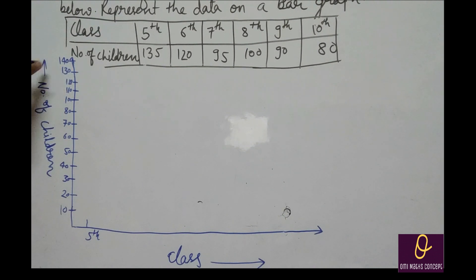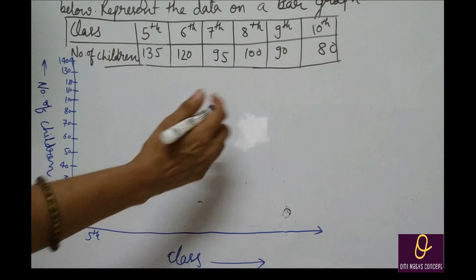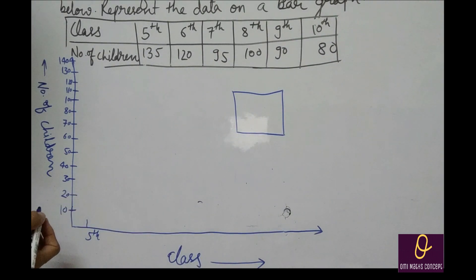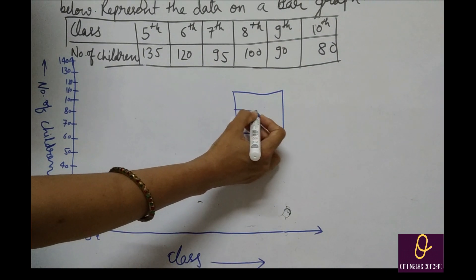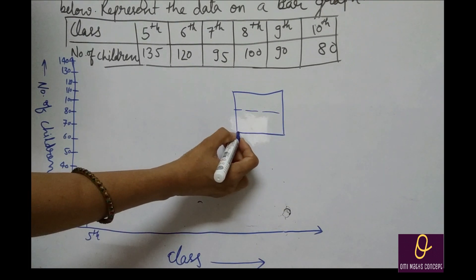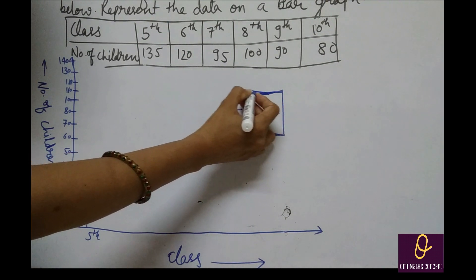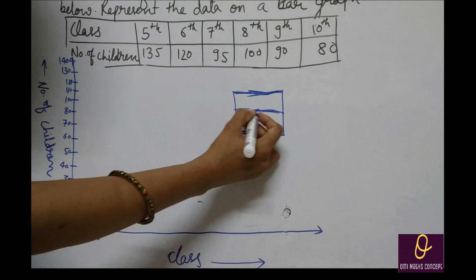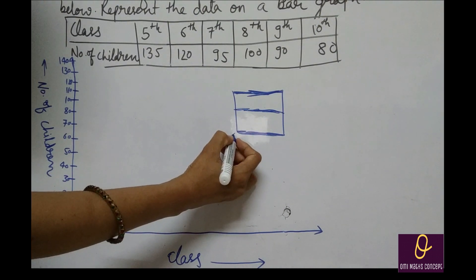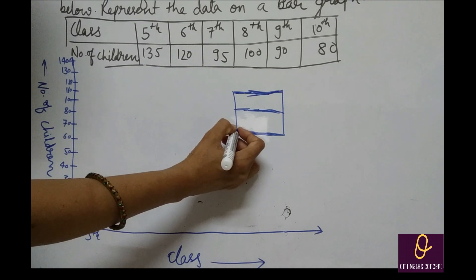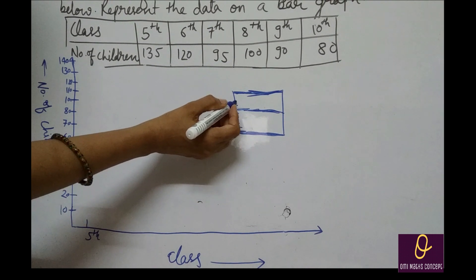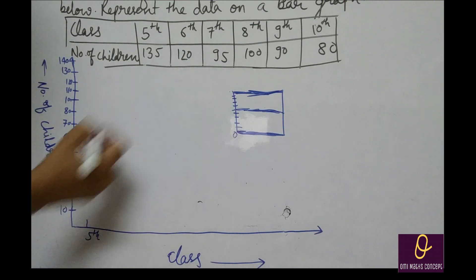135 देखिए. Graph paper में एक square box मिलेगा. इसमें dark line मिलेंगी. इन दोनों के comparison में एक line यहाँ पर मिलेगी जो थोड़ी hulky dark होगी — यह 0 हो गया. उसके बाद division मिलेंगे: 1, 2, 3, 4, 5, 6, 7, 8, 9, और 10 वाला next number बन जाता है.